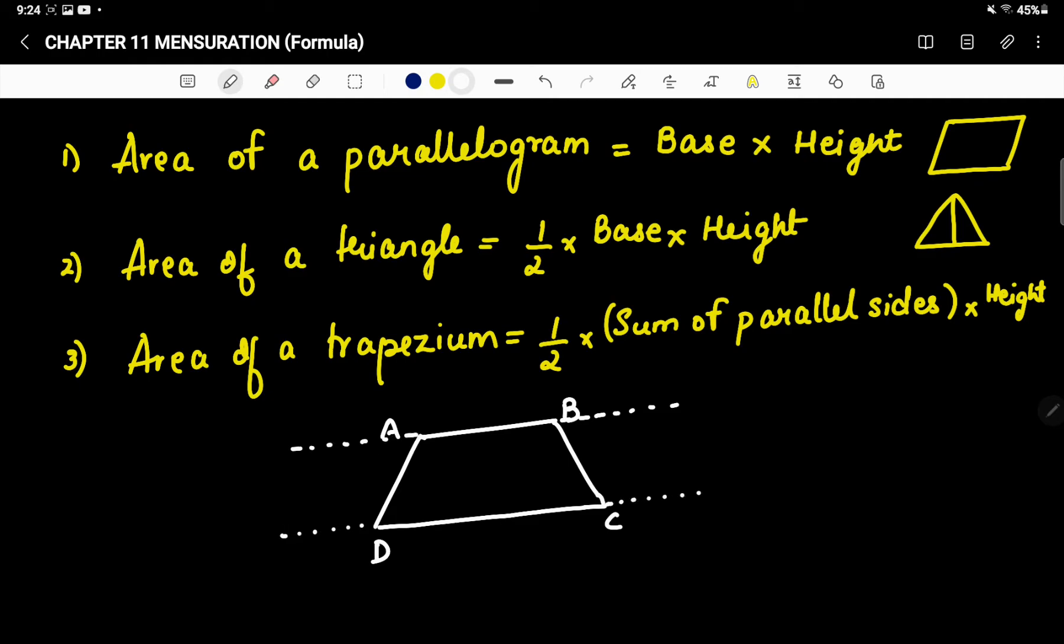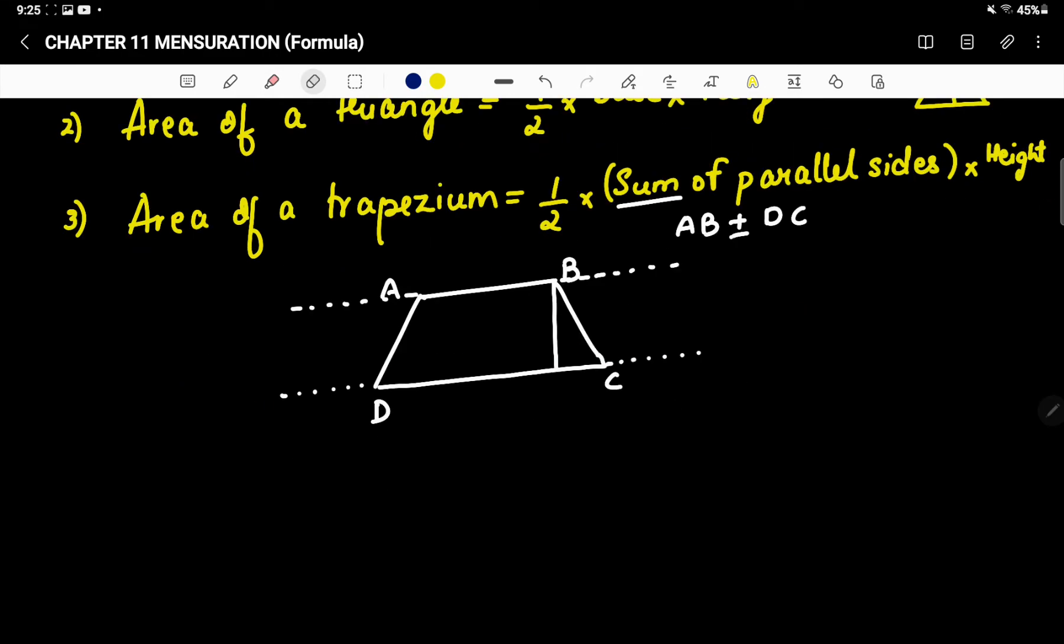So area of trapezium, you can extend only parallel lines. But in case if I extend AD and BC, then they will intersect. So AD and BC are not parallel, keeping that in mind. So in the formula what is given is sum of parallel sides, meaning we have to do AB plus DC. We have to find the sum of these.